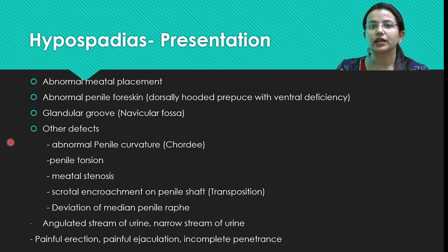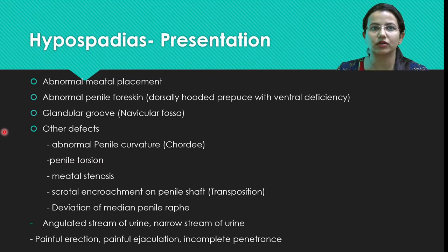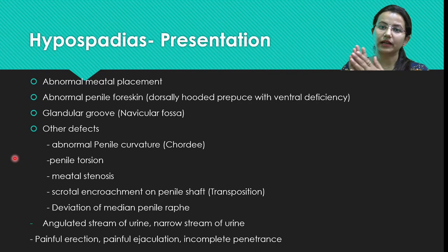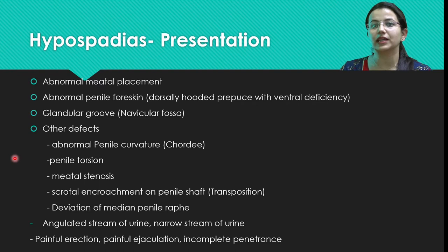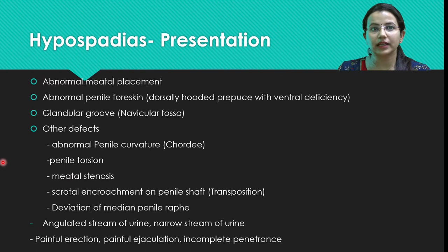The glandular groove should be commented upon: if the tube has not completely tubularized there will be a deep furrow-like structure on the glans called the navicular fossa. Another important feature to comment on is abnormal penile curvature, known as chordee. We must assess whether the penis is straight or curved. If chordee is severe or greater than 30 degrees, it must be corrected before any urethroplasty.